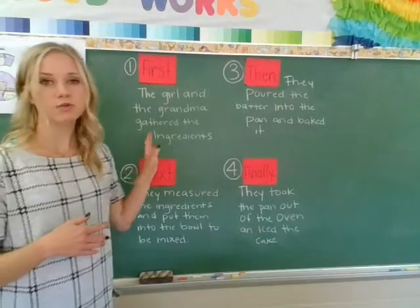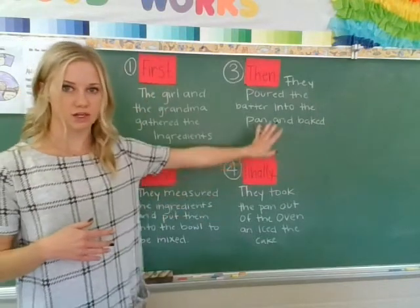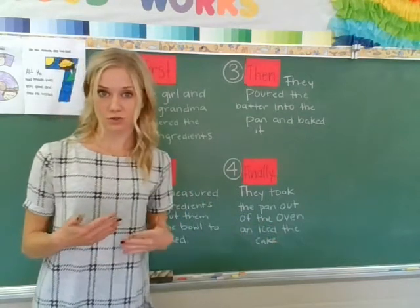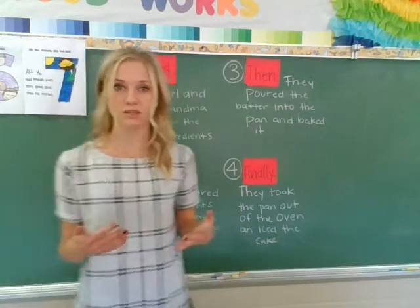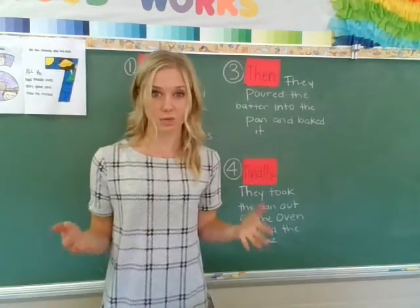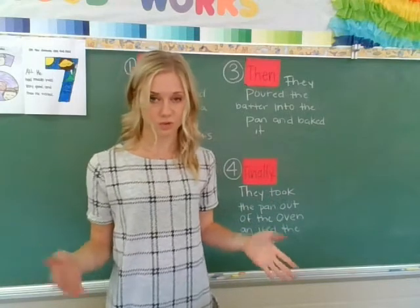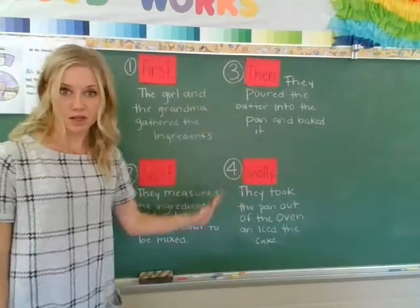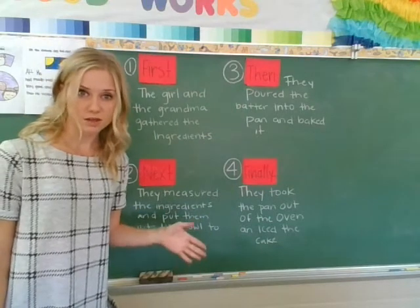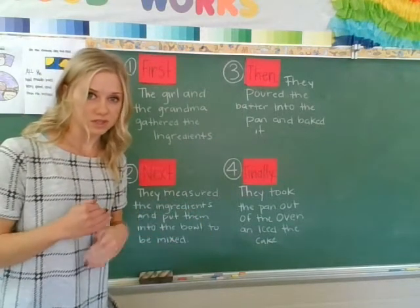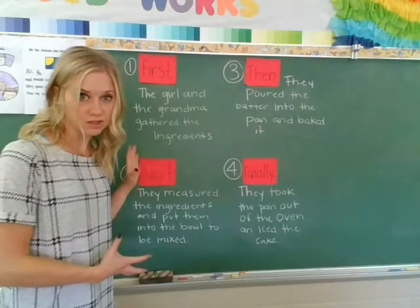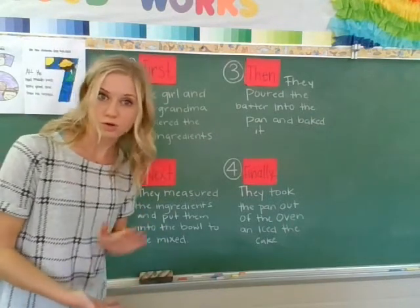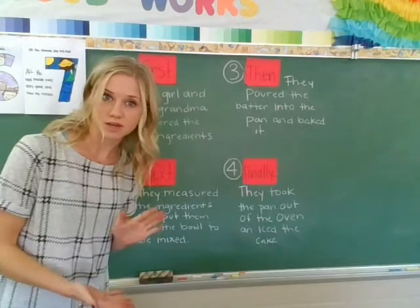Now, after we sequenced our stuff, we can put these in order of how they happen to summarize our story — or in this case, how to make thunder cake. We can put these events in order of how they happen, and that can be our summary, because summarizing is kind of the same as sequencing. We can use our sequenced ideas to summarize our story or how to make thunder cake.